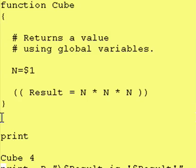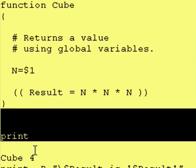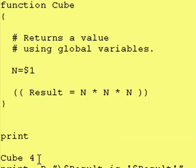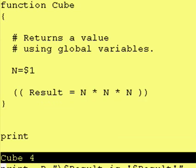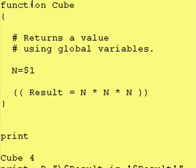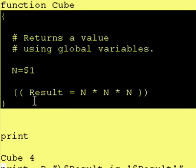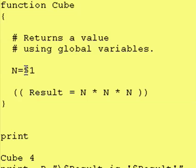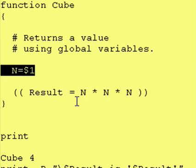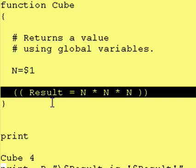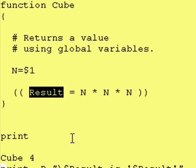After the definition, we just do a simple print statement for extra white space in the output. Here is where we call our function — we say cube space 4. Now let's look at the code. Here's cube, here's the definition. What we do is we take the dollar sign 1, which in this case is 4, and we assign it to n. And then we cube n and store it in a variable called result.